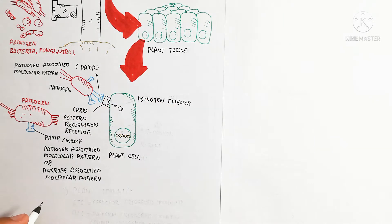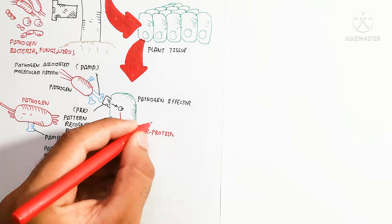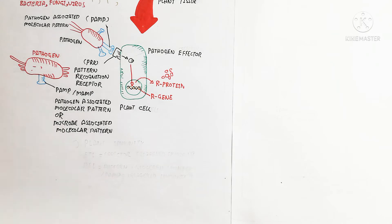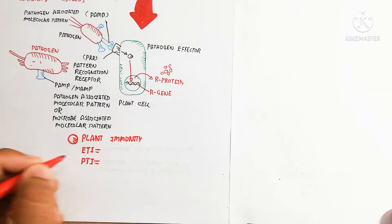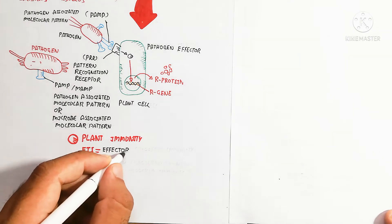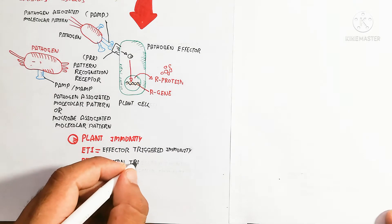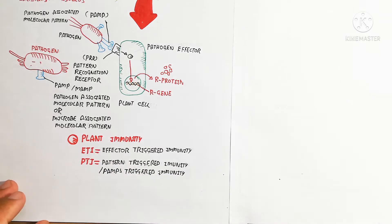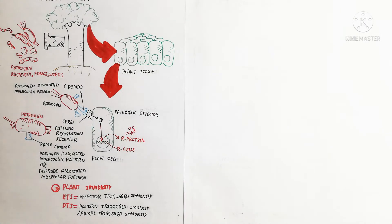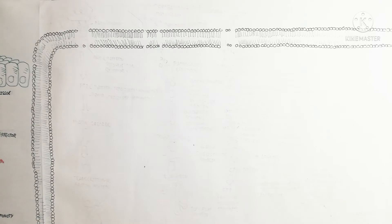PAMP (pathogen-associated molecular pattern) or MAMP (microbe-associated molecular pattern) are present on the surface of the pathogen. When the pathogen is recognized, a pathogen effector is produced, which triggers R protein production from the R gene. Plant immunity is of two types: ETI (effector-triggered immunity) and PTI (PAMP-triggered immunity). We will discuss PTI first and then ETI.